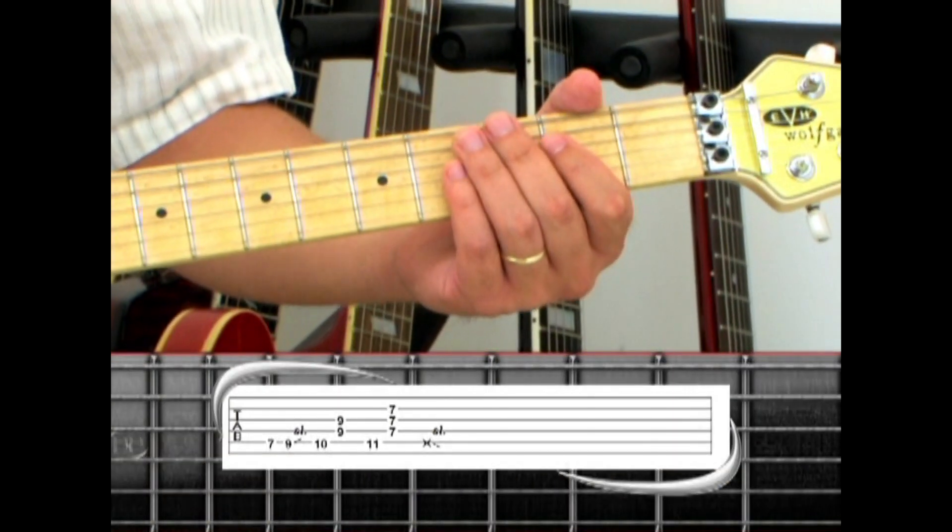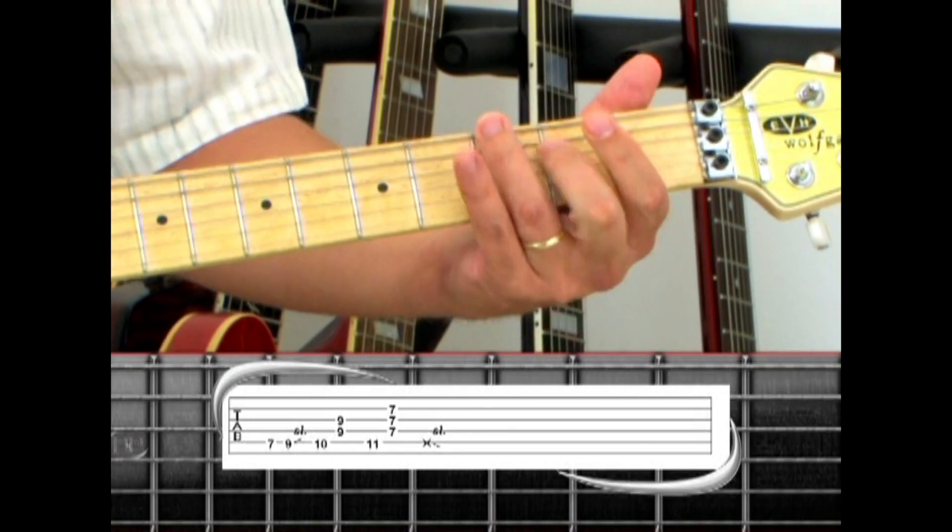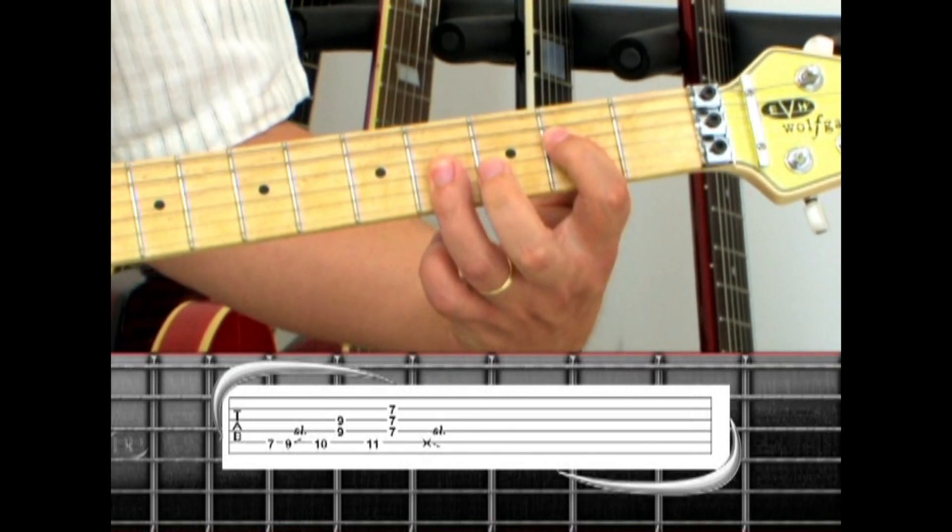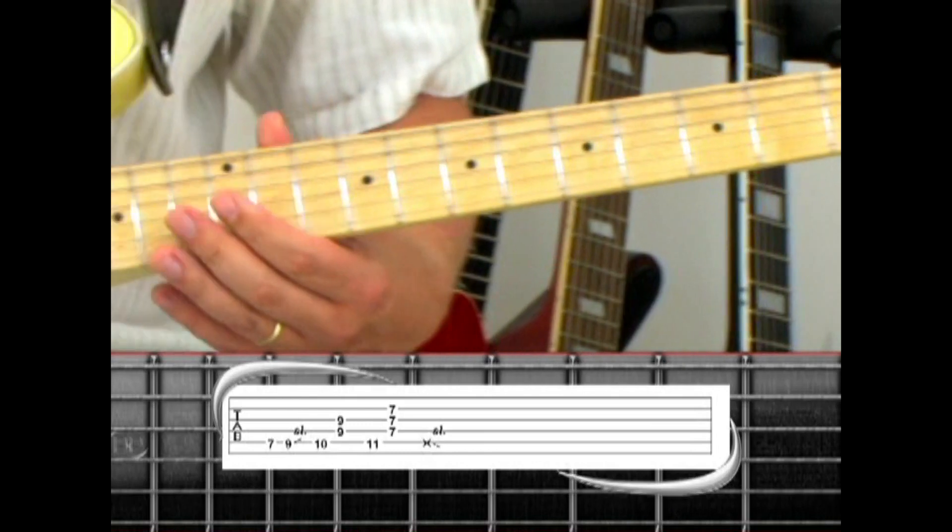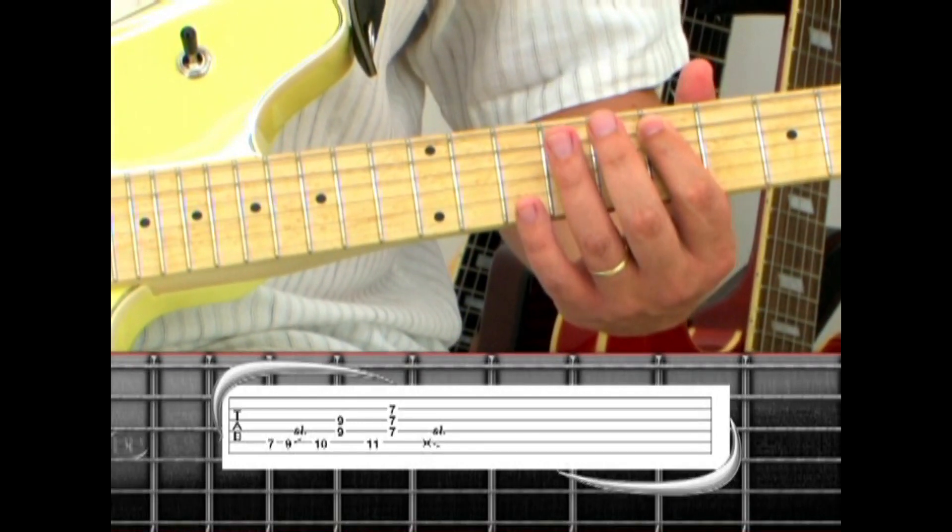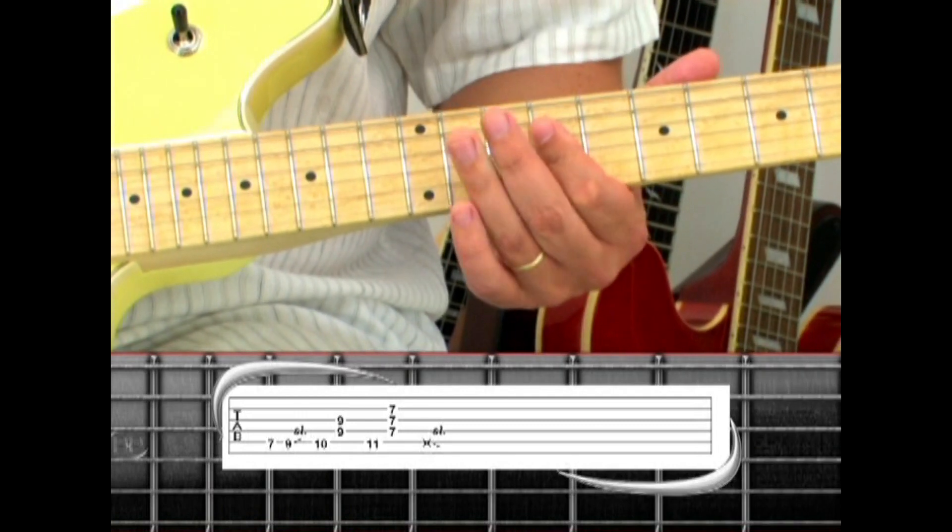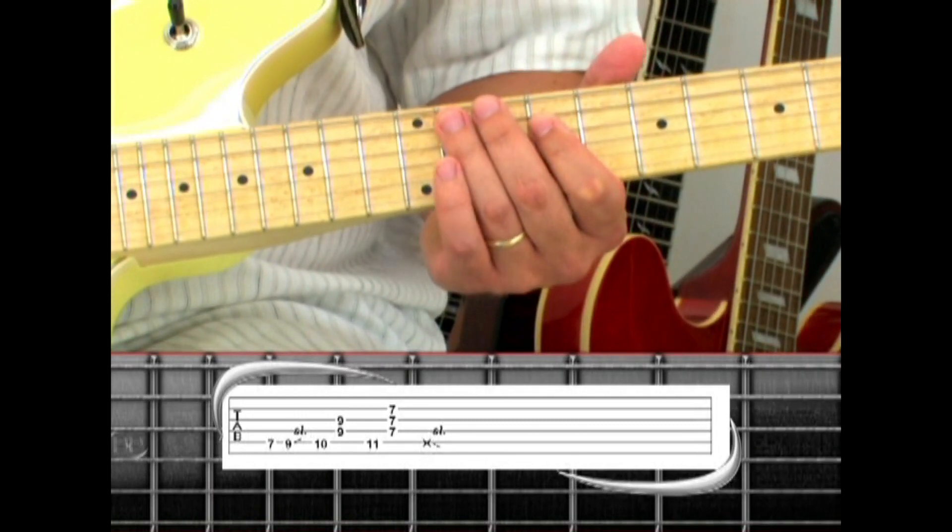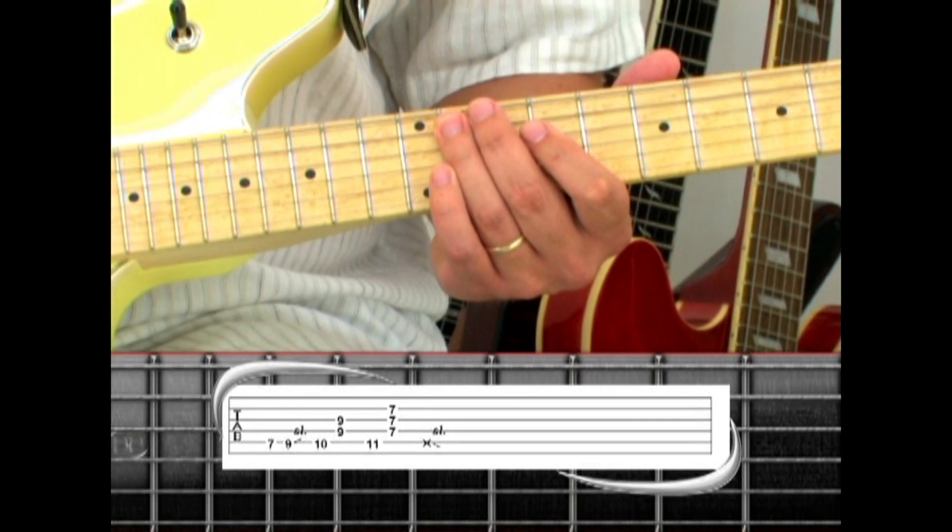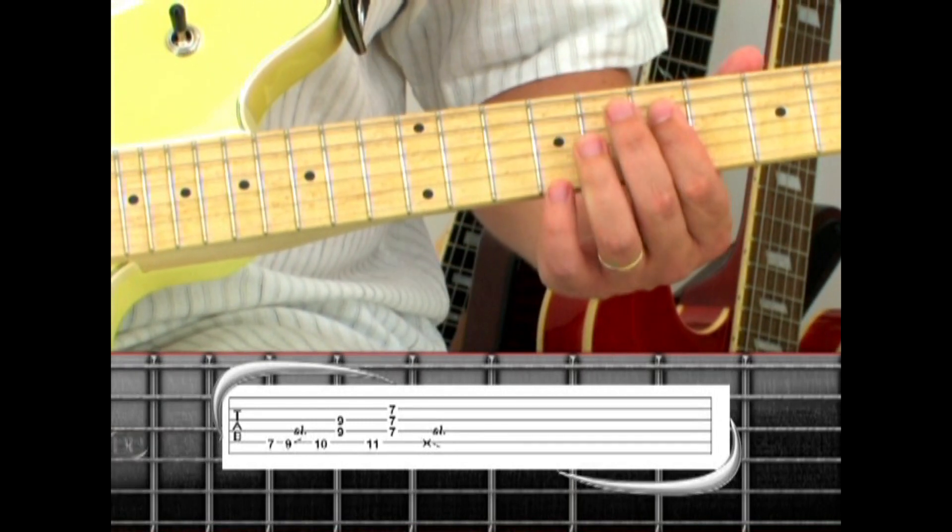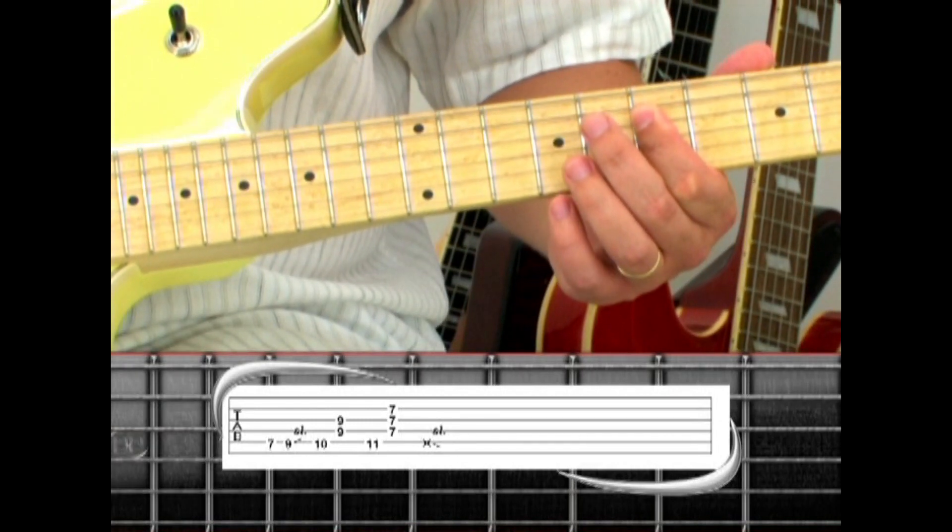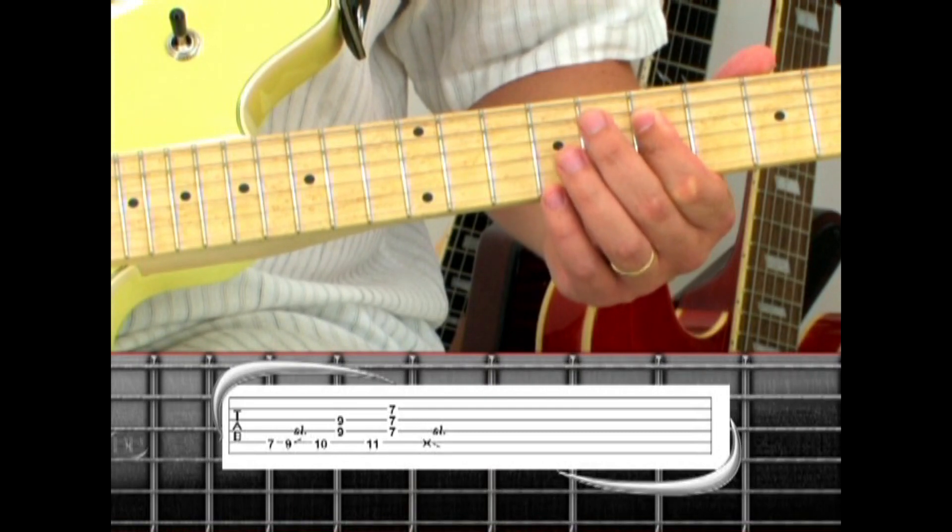The main riff is repeated, then fill on the 5th string 7, 9, slide to 10, bar the 9th fret on strings 3 and 4, 5th string 11, and bar the 7th fret on strings 2, 3, and 4. End by sliding down the 5th string.